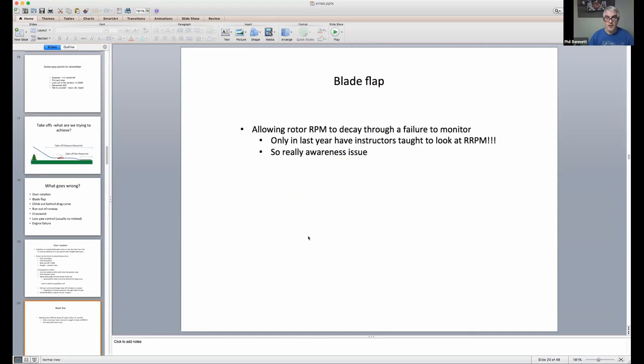So if we think back to our planning phase that we talked about early on, if you've planned to take off in 500 meters, for example, and during the course of the takeoff, we've spent 200 meters sorting out a problem. Well, now, if we thought we needed 500, now we need 700. And that might not be available to you at the airfield that you've flown to. Next thing is blade flap. What happens here? Well, basically, that's basically allowing the rotor RPM to decay.